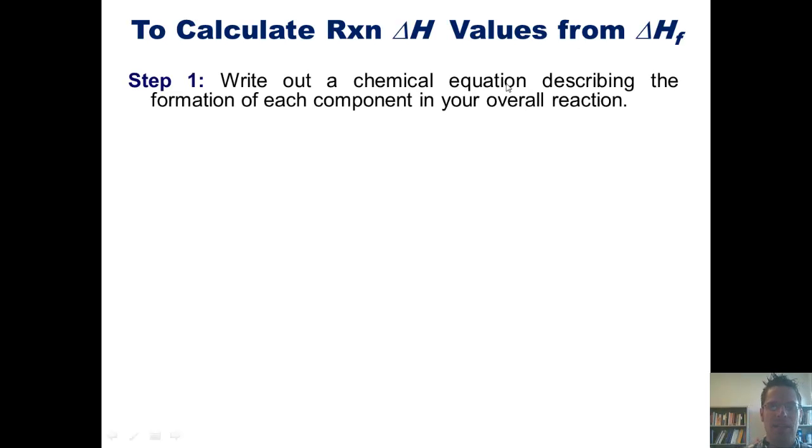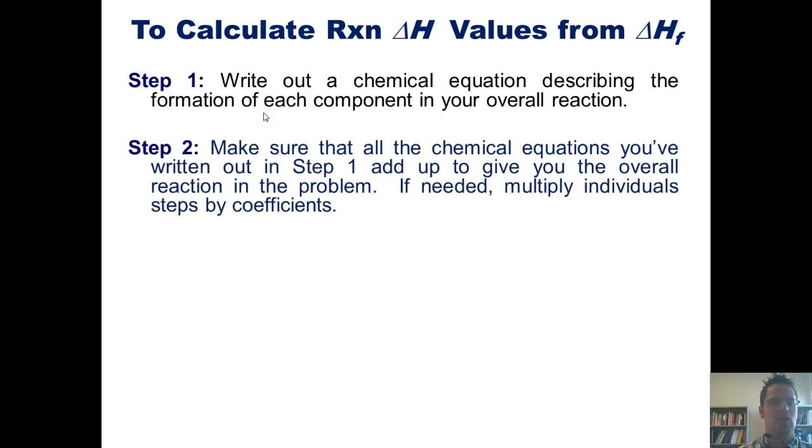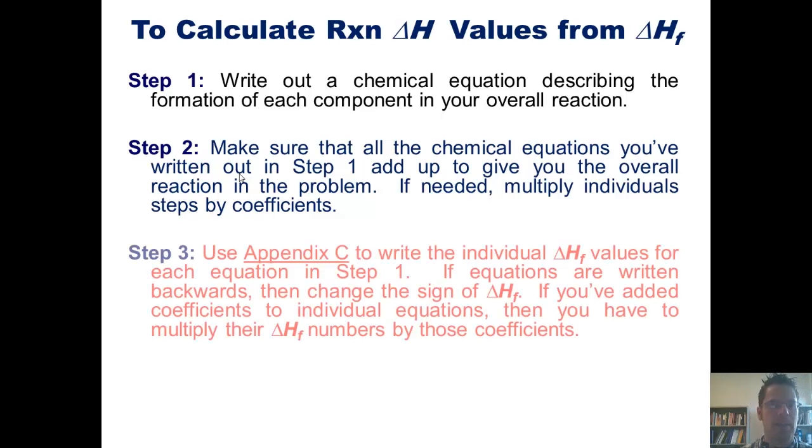Step 1: Write out the chemical equation describing the formation of each component in our overall reaction. Step 2: Make sure that all the chemical equations we've written out in step 1 add up to give the overall equation in the problem. If needed, multiply individual steps by coefficients.